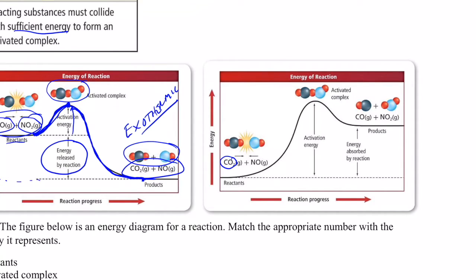Now let's look at the reverse reaction: carbon dioxide reacting with nitrogen monoxide. The oxygen in CO₂ needs to bump into the nitrogen in NO with enough energy to form the activated complex. The reactants gain energy to form the activated complex — that energy is the activation energy. Once formed, it decomposes into the products carbon monoxide and nitrogen dioxide. In this case, the products have more energy than the reactants.